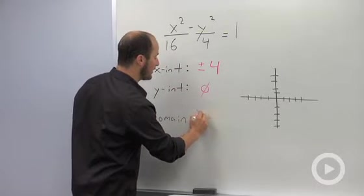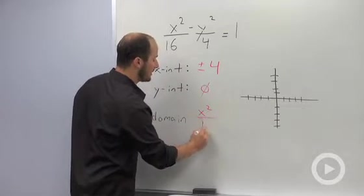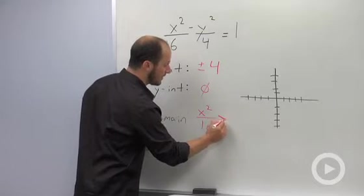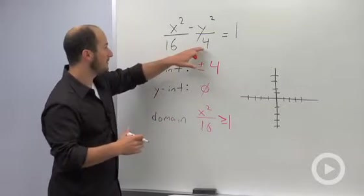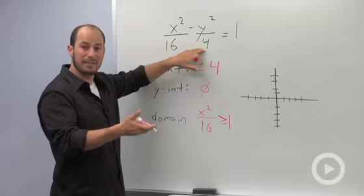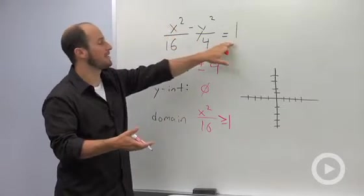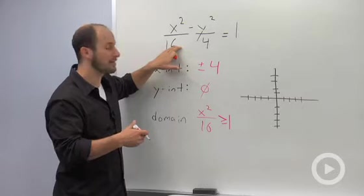So what that tells us is we know that x squared over 16 has to be greater than or equal to 1, because if we are subtracting a positive number from this term, giving us 1, that means this has to be greater than 1 already.